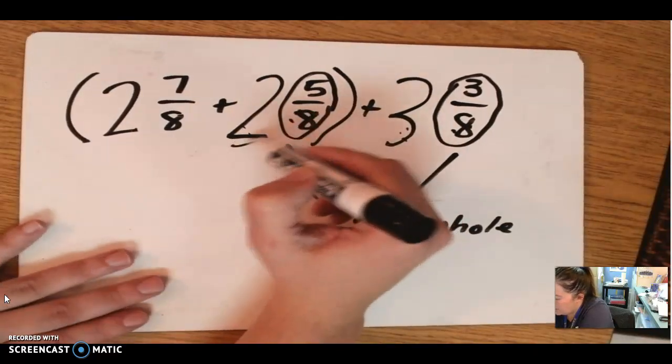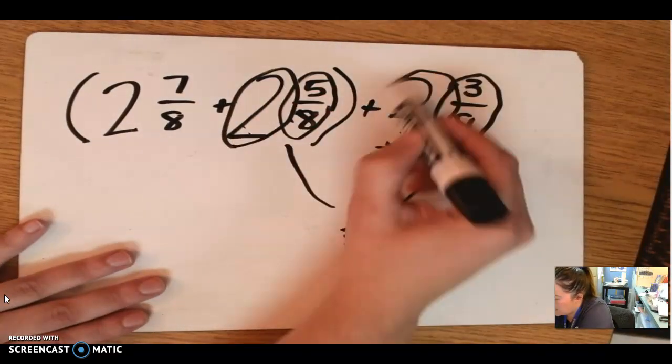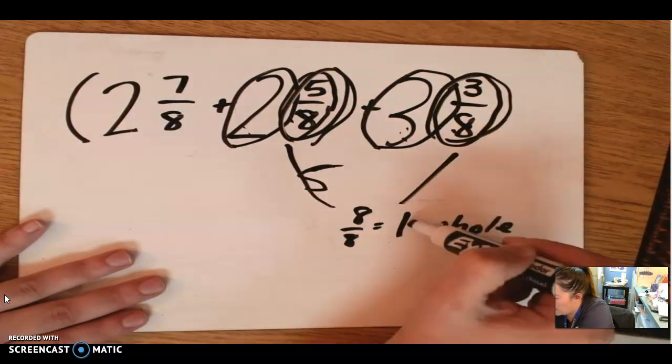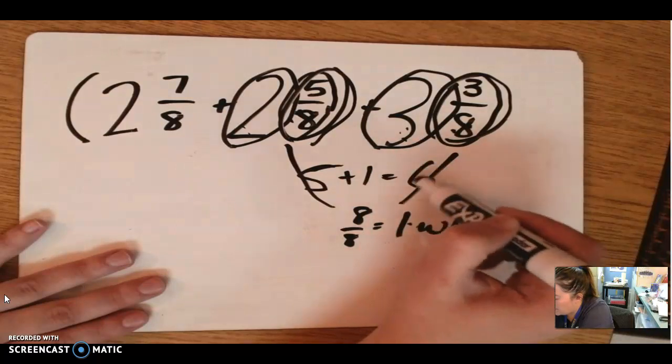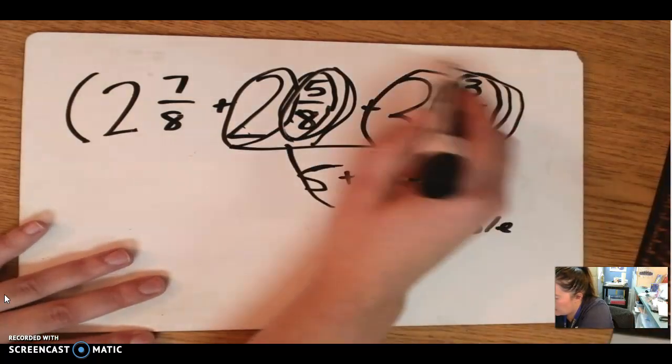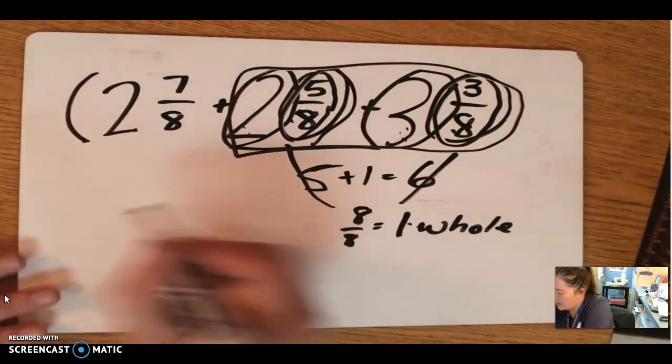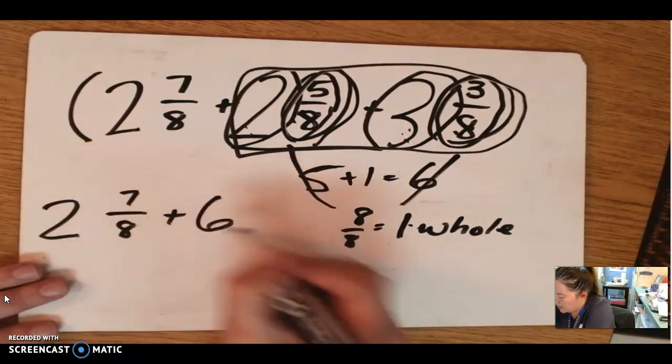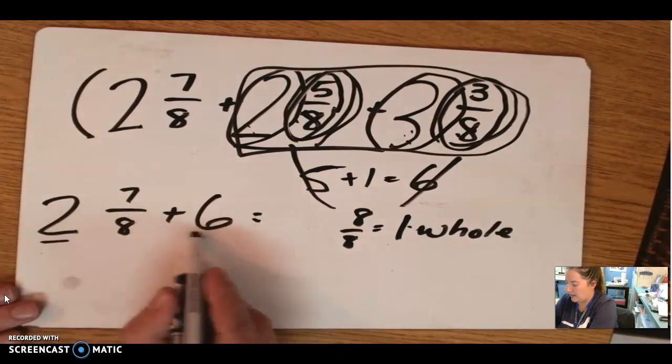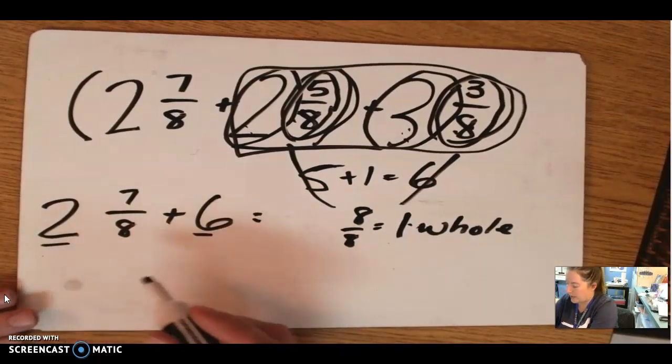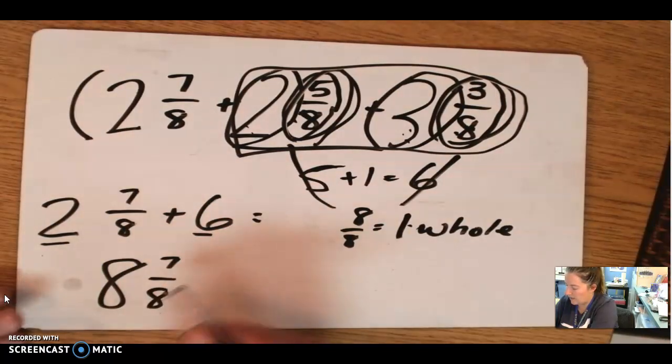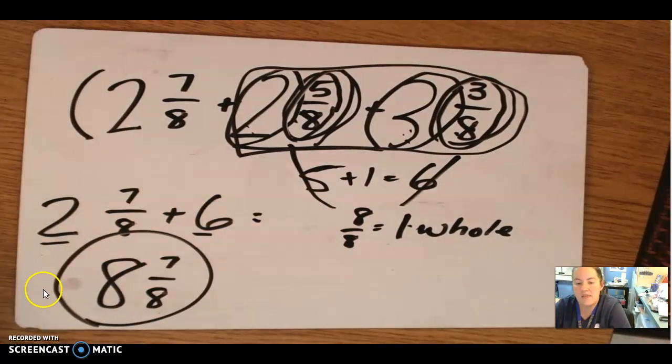Because I have 2 plus 3, which is 5, plus these two pieces made 1. So 5 plus 1, I have 6 wholes out of this whole thing is 6 wholes. So now I just need 2 and 7 eighths plus 6. All I have to do is add the whole numbers. 6 plus 2 is 8, and this fraction piece stays the same. So we have 8 wholes and 7 eighths.